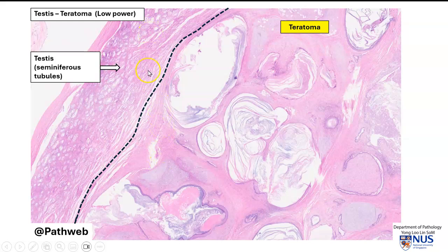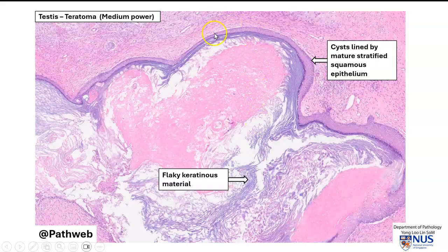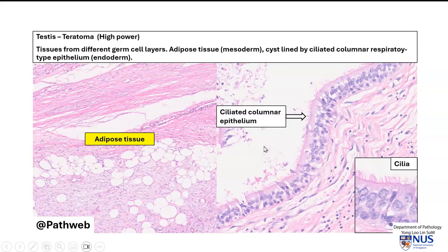Here are some other labeled photographs. We can see the normal testes and the teratoma, which is quite prominently cystic. Here again, the cystic structure lined by mature stratified squamous epithelium containing this flaky keratinous material. And over here, we see two other components: adipose tissue, which derives from mesoderm, and ciliated columnar epithelium, which derives from endoderm.